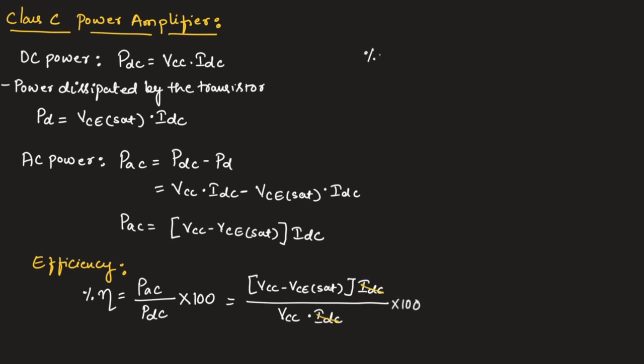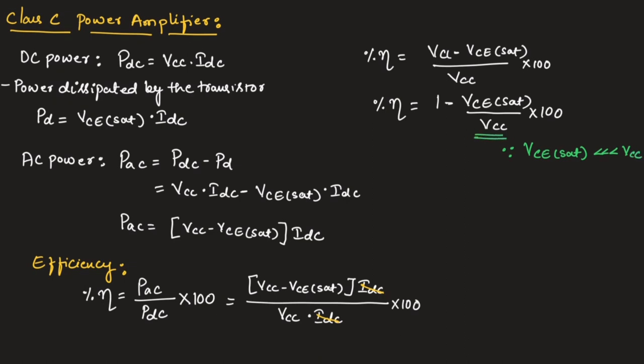We can write percentage efficiency = [1 - VCE(sat)/VCC] × 100. Since VCE(sat) is very much less than VCC, this term will have very less value.